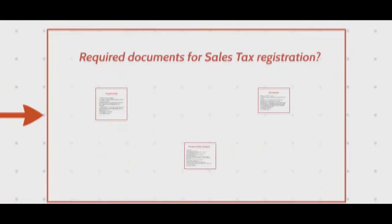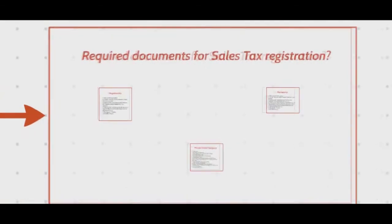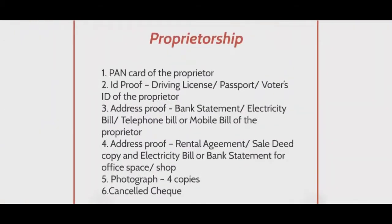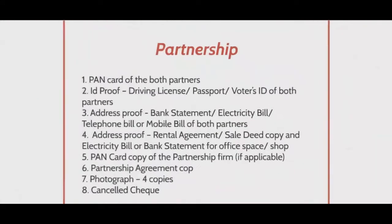The initial documents required for sales tax registration are as follows. For a proprietorship: the PAN card of the proprietor, ID proof of the proprietor, address proof of the proprietor, address proof of the office space, 4 photographs, and a cancelled cheque will be required.